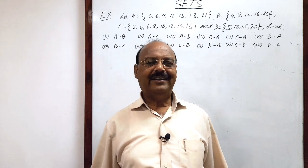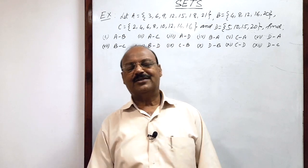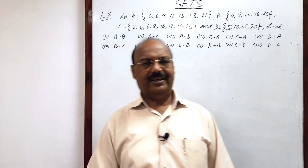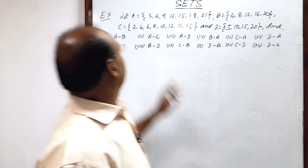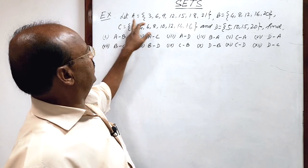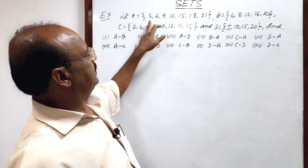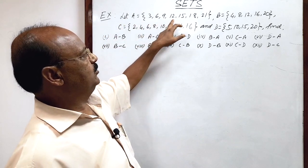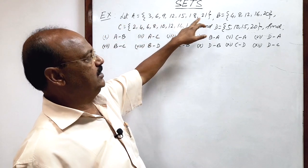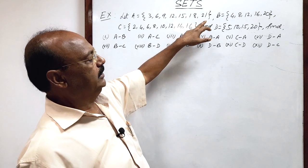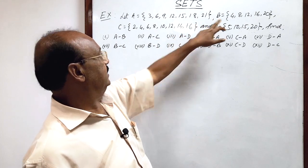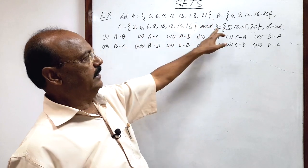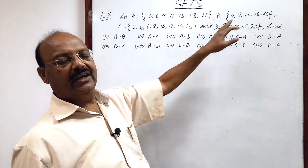Welcome students. Let us see a very interesting question from the chapter Sets. Here the question is that A is a set having elements 3, 6, 9, 12, 15, 18, 21. Similarly, set B, set C, and set D are given.